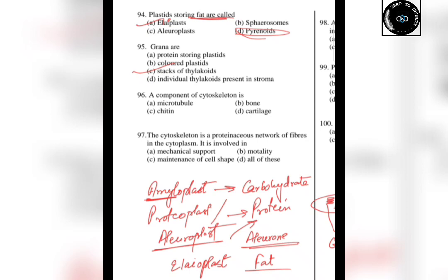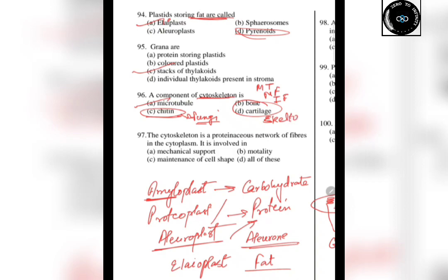The next question is about the components of the cytoskeleton. The cytoskeleton has three components: microtubules, microfilaments, and intermediate filaments. Chitin is the composition of fungal cell walls. Cartilage and bones are part of the skeletal system — cartilage has less salt accumulation and is soft, while bones have more salt accumulation and are hard.